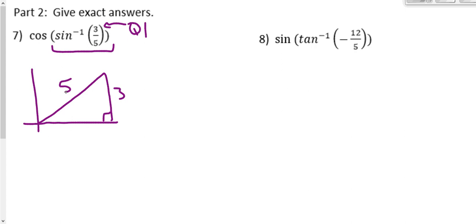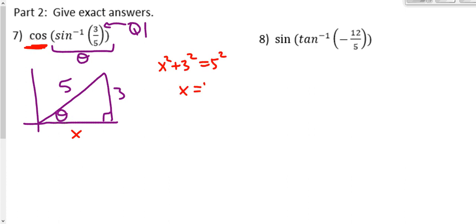We don't really want to find the angle itself — we just want to find the cosine of that angle. So we need to know the adjacent side as well. We can call the angle theta. Now we find the length of x using the Pythagorean theorem: x squared plus 3 squared equals 5 squared. This is a 3-4-5 triple, so x equals 4. The cosine of the angle is adjacent over hypotenuse, which is 4 fifths.